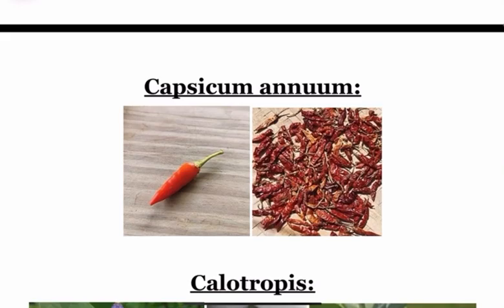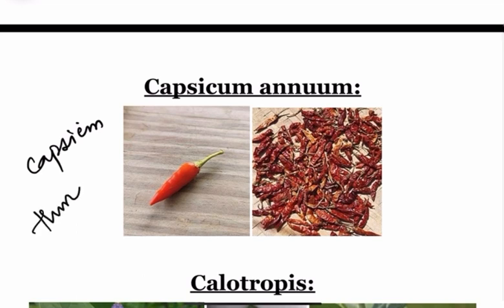Capsicum Annum — the active principle is Capsicin. It also produces Hunan's hands, that is contact dermatitis to chili powder.